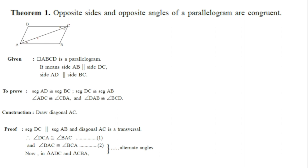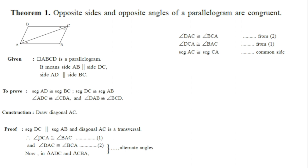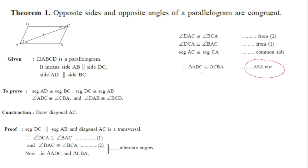By this construction — diagonal AC — we have got two triangles: triangle ADC and triangle CBA. To show these are congruent: angle DAC is congruent to angle BCA (from equation 1), angle DCA is congruent to angle BAC (from equation 2), and segment AC is congruent to segment CA as it is the common side. By two angles and the side between them, these two triangles are congruent by the ASA test.